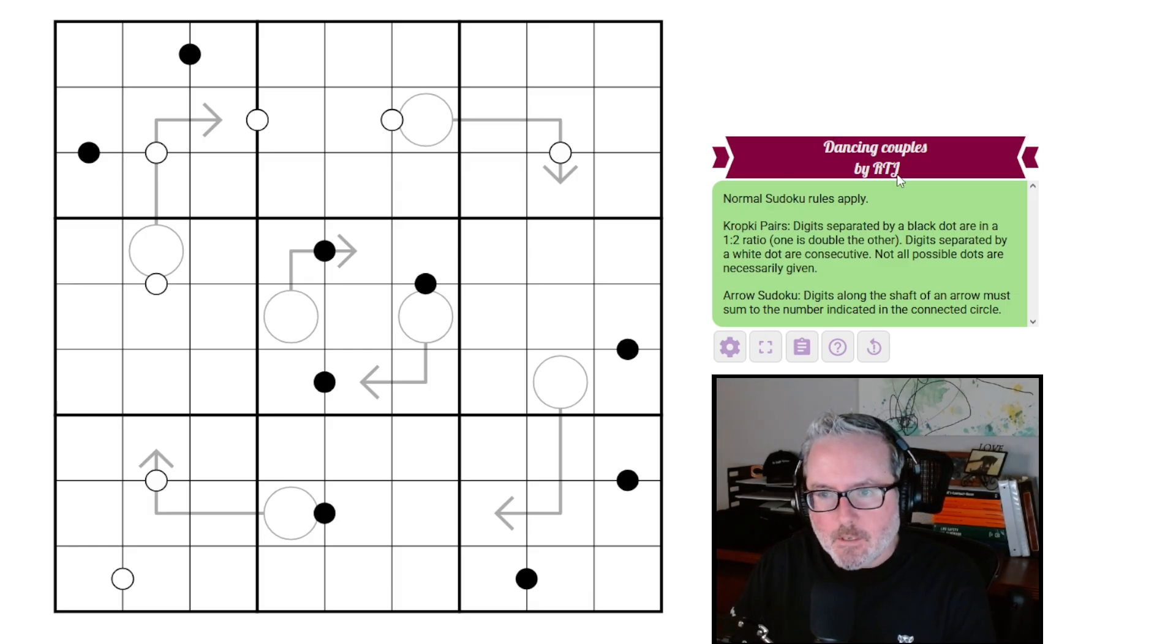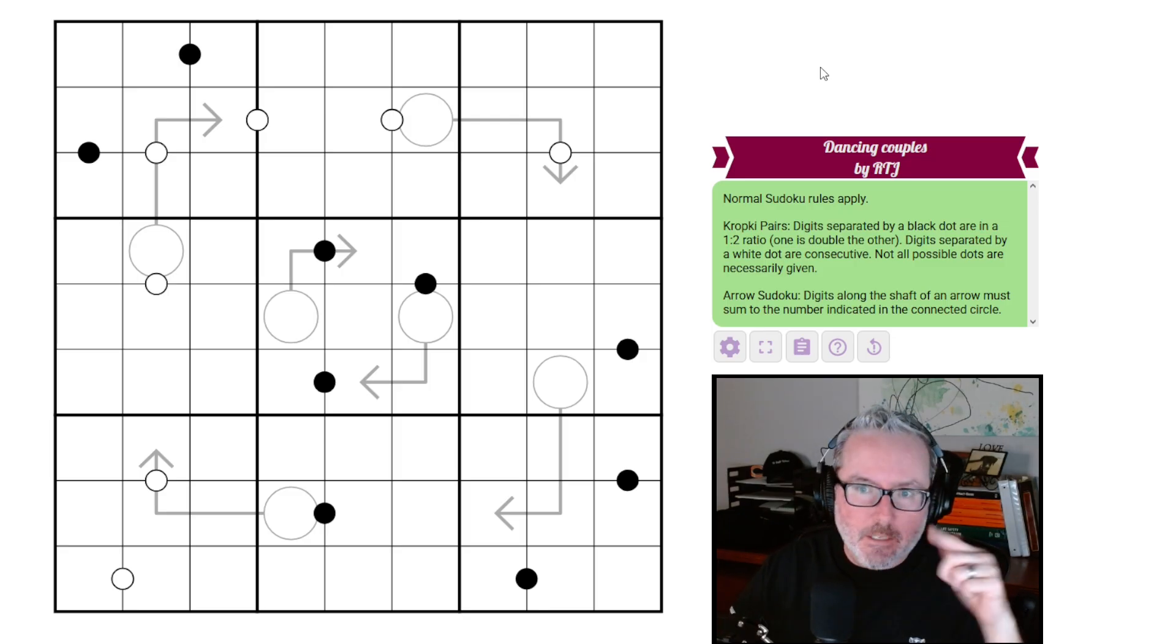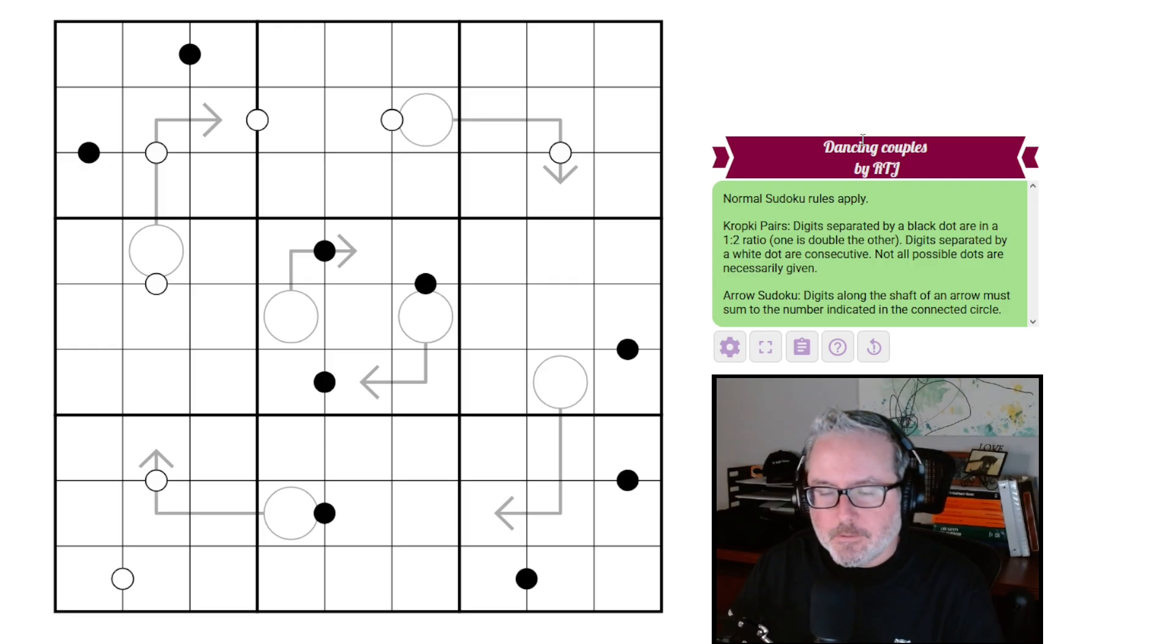There's a little bit of backstory on this one. This setter, RTJ, apparently created this puzzle because of, or influenced by, I believe it was Argentinian Tango. So it's called Dancing Couples for that reason, again, by RTJ.